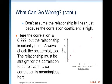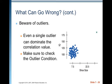Don't assume the relationship is linear just because the correlation coefficient is high. You should look to make sure your relationship is linear before calculating a correlation coefficient because it's nonsensical if you don't have a linear relationship. For example, a correlation of 0.979 may exist, but if the relationship is actually bent, it doesn't matter — you don't have a linear relationship. Always check the scatter plot. The relationship must be straight for the correlation to be relevant, otherwise correlation is meaningless. Beware of outliers — even a single outlier can dominate the correlation value. Always check the outlier condition.